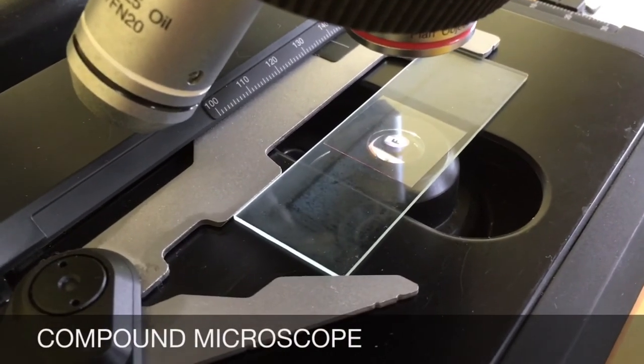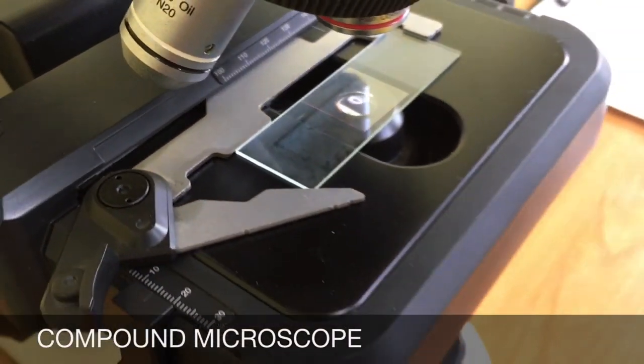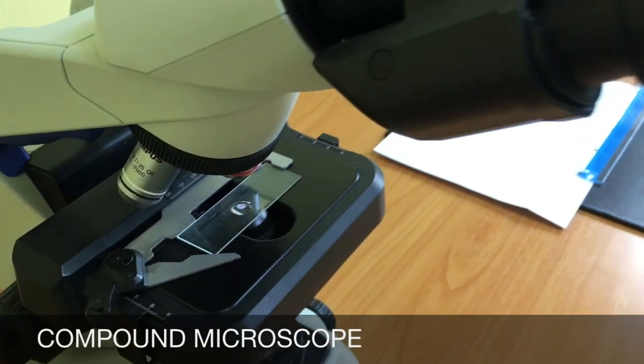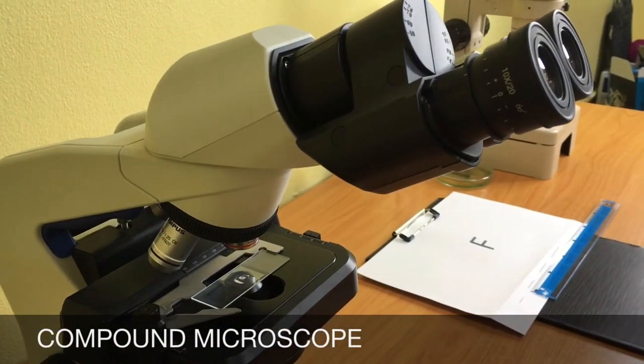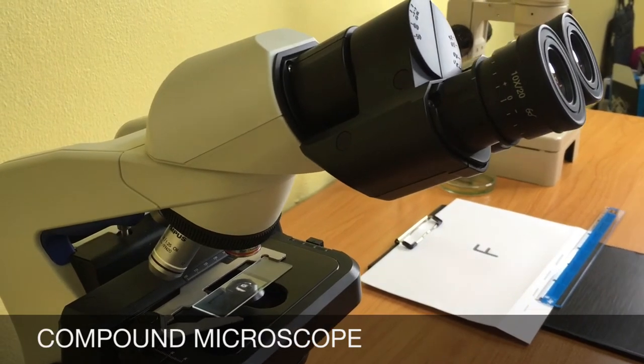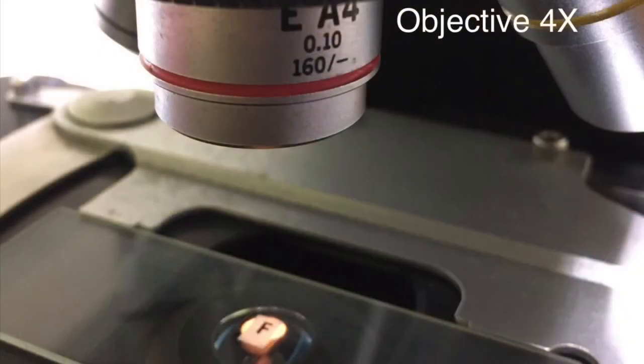Then, observe the letter F under the compound microscope. Please note that we use tenfold magnification of the ocular lens and the fourfold magnification for the objective lens.